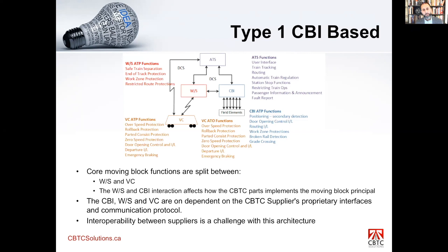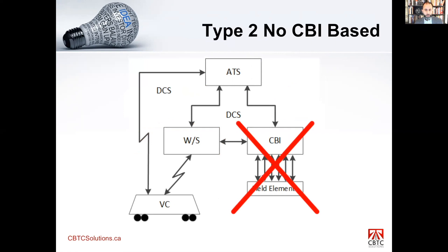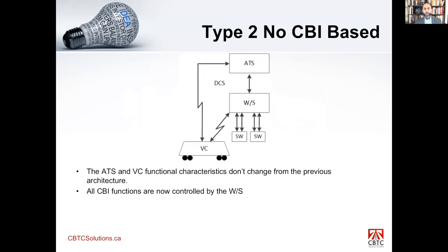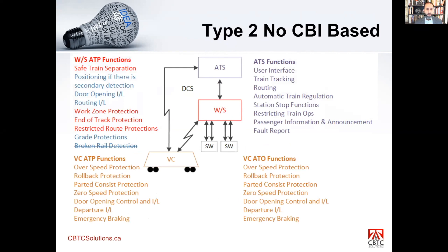Architecture Type 2 is the no-CBI architecture. In this architecture, the CBI is removed completely and all CBI functions are transferred to the wayside itself. Your architecture consists of the ATS, the wayside, and the vehicle controller. The ATS and vehicle controller characteristics don't change, but all CBI functions are now controlled by the wayside. The functions that were previously shown in blue as part of the CBI are now part of the wayside.